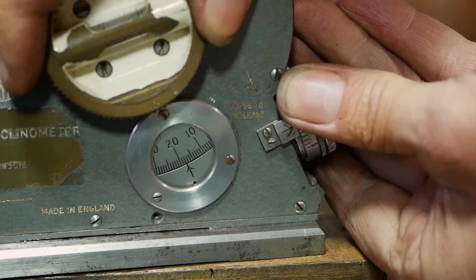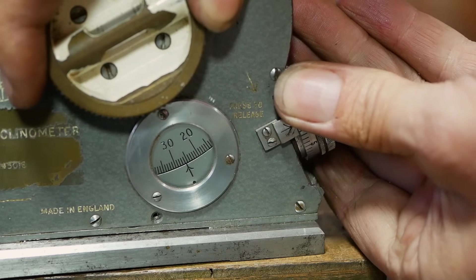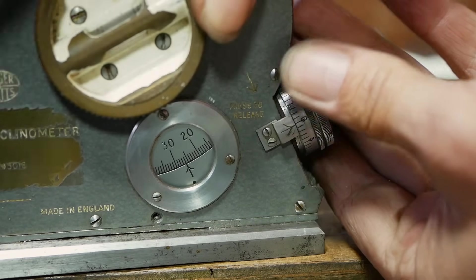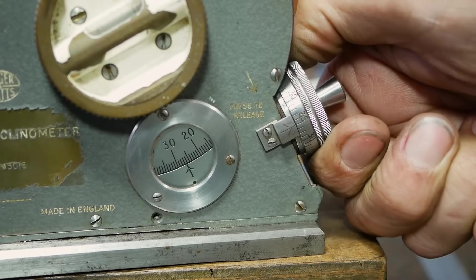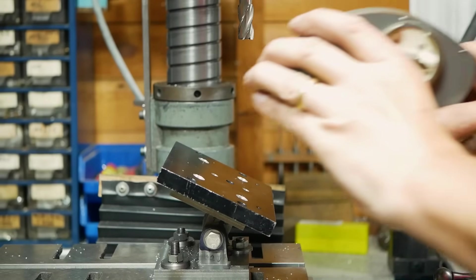You may be wondering how we set the angle of the adjustable angle plate we previously showed you in the video. A great way to do this is to use a clinometer, and here Alistair sets it to the dihedral angle, minus 90 degrees, with a small correction factor.